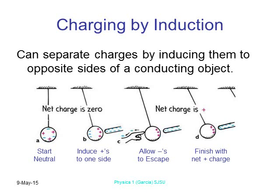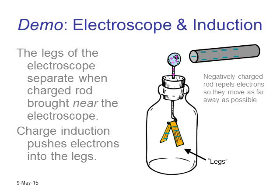You can charge things by induction. Start with a jumbled neutral ball, chase the electrons to one side with the positives on the other, then give those electrons a pathway to escape. Now the ball stays charged — that's charging by induction. You can do this with an electroscope too: without even touching it, just get close enough and you'll send electrons down to the legs, leaving a positively charged top as the electrons are repelled down.